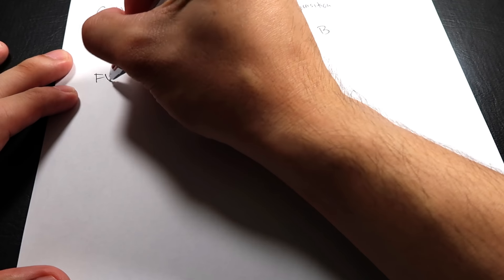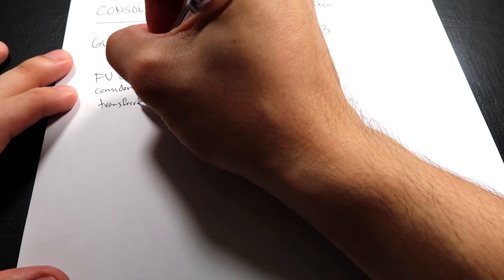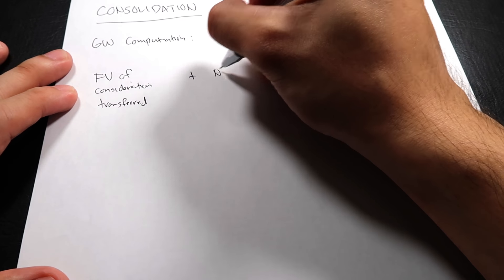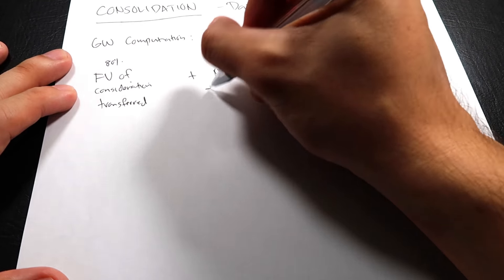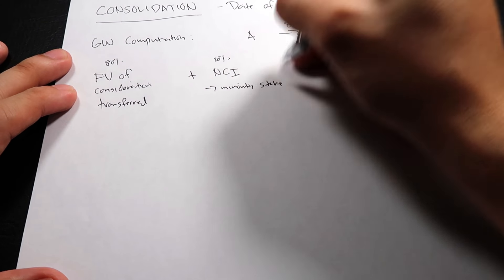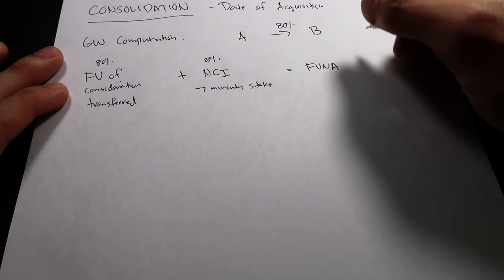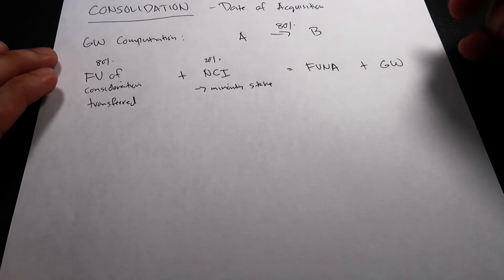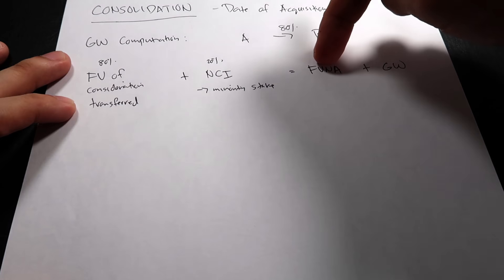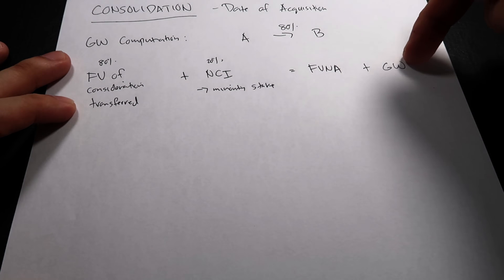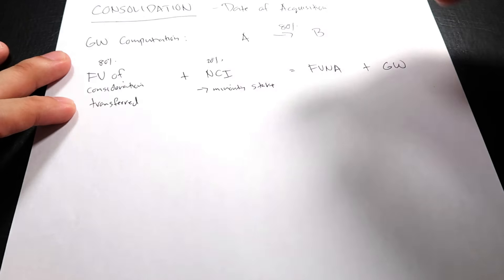The equation is: fair value of consideration transferred plus the non-controlling interest (NCI) — the NCI is the 20 percent, the minority stake — this should be equal to the fair value of the net assets of the subsidiary plus the goodwill. So how do you compute for the goodwill? Fair value of consideration transferred plus NCI, less the fair value of net assets, you get the goodwill. On the other hand, if the fair value of net assets is larger than the two, you have a gain on bargain purchase.